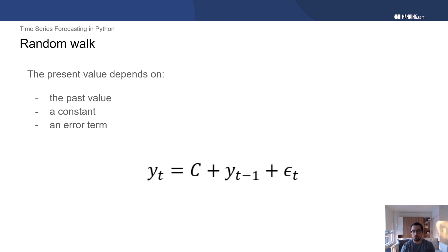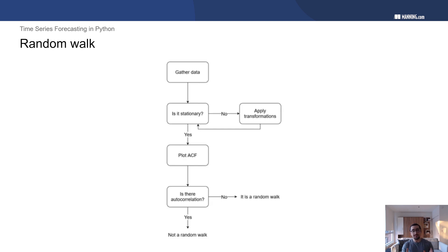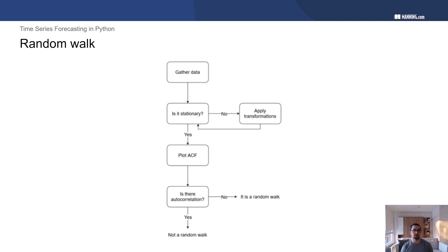It's very important to recognize when we have a random walk process. Here is the procedure we follow to identify one: first, gather the data; then check for stationarity. If the series is not stationary, apply a transformation until it is. Once stationary, plot the ACF — the autocorrelation function. When we look at the ACF, we determine whether there is autocorrelation. If there is no autocorrelation, we say it is a random walk; otherwise, we have something else. Let's take the time to go through each of these new concepts.